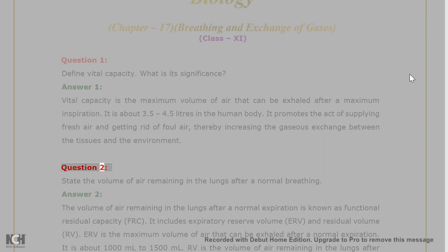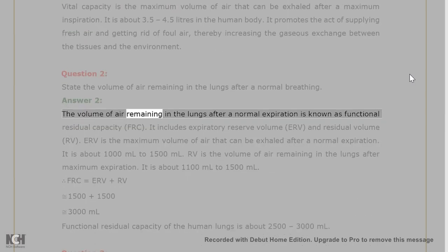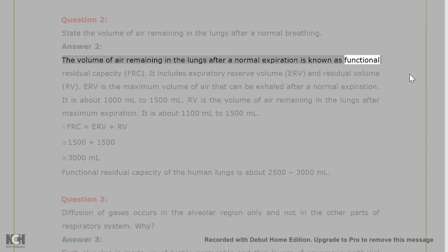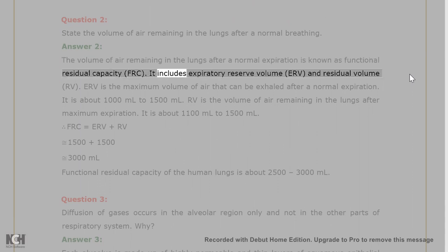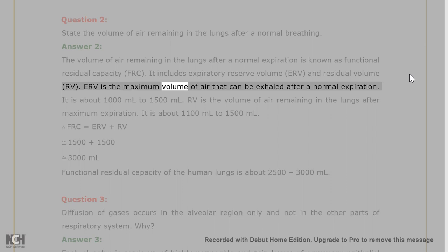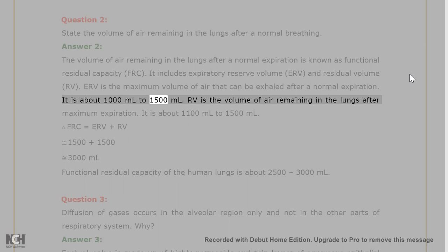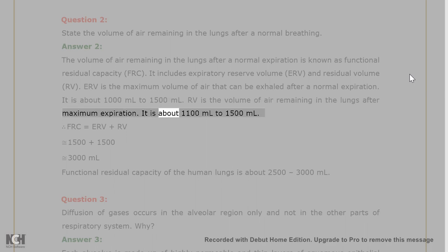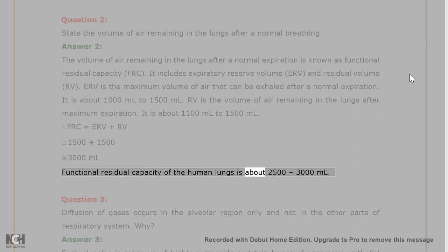Question 2: State the volume of air remaining in the lungs after normal breathing. Answer 2: The volume of air remaining in the lungs after a normal expiration is known as Functional Residual Capacity (FRC). It includes Expiratory Reserve Volume (ERV) and Residual Volume (RV). ERV is the maximum volume of air that can be exhaled after a normal expiration, about 1000–1500 ml. RV is the volume remaining after maximum expiration, about 1100–1500 ml. FRC = ERV + RV = approximately 2500–3000 ml.